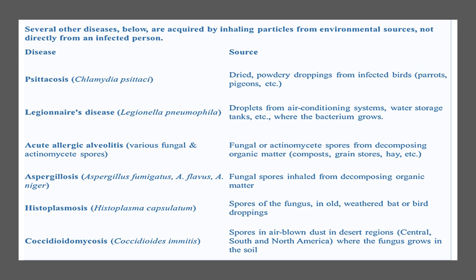Acute allergic alveolitis is caused by various fungi and actinomycetes spores, and the source of these spores is decomposing organic matter. Aspergillosis is caused by fungi Aspergillus fumigatus, Aspergillus flavus, and Aspergillus niger, and the source of these fungal spores is also decomposing organic matter. Histoplasmosis is caused by the fungus Histoplasma capsulatum, and the spores of this fungus grow in old dried bat or bird droppings. Coccidioidomycosis is caused by the fungus Coccidioides immitis, and the spores of this fungus grow in airborne dust in desert regions of Central, South, and North America, where this fungus grows in the soil.